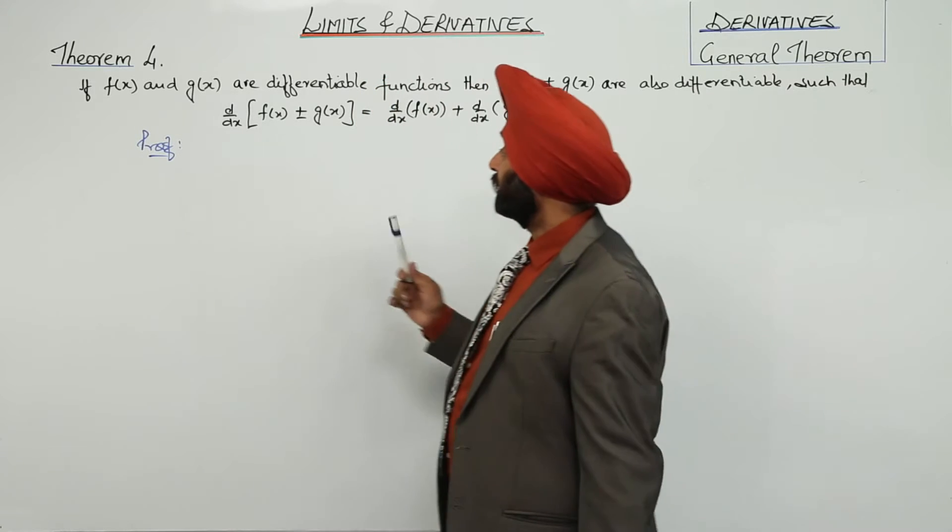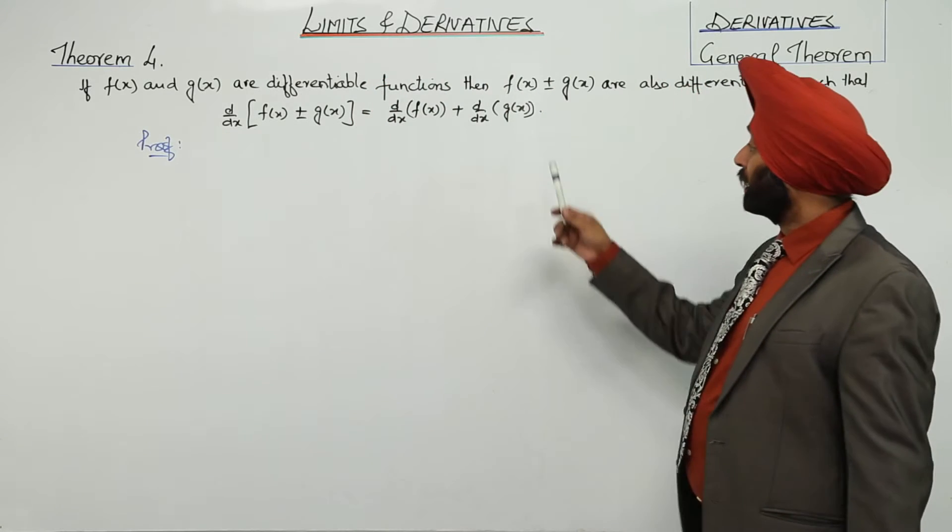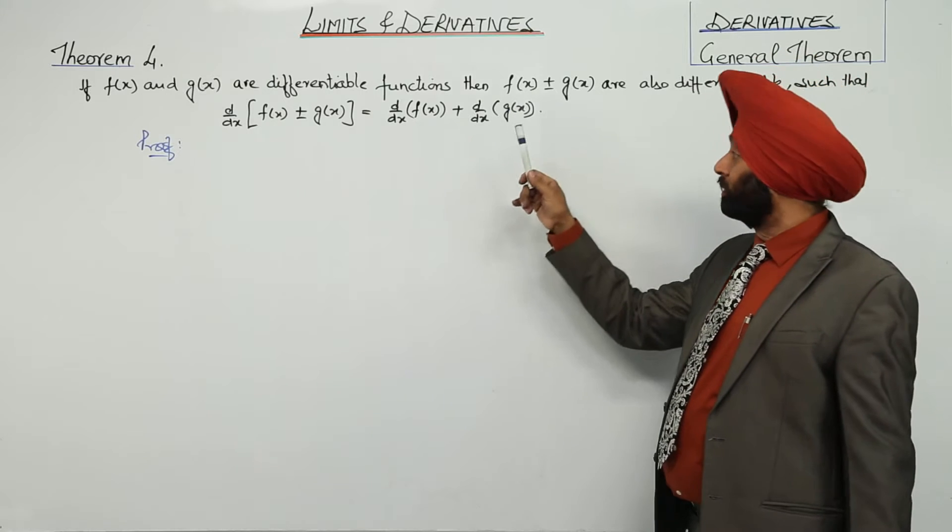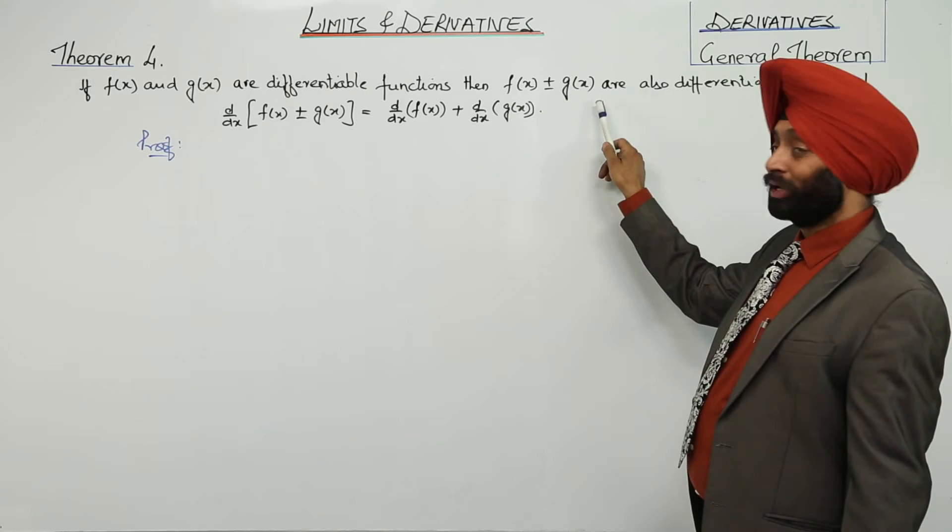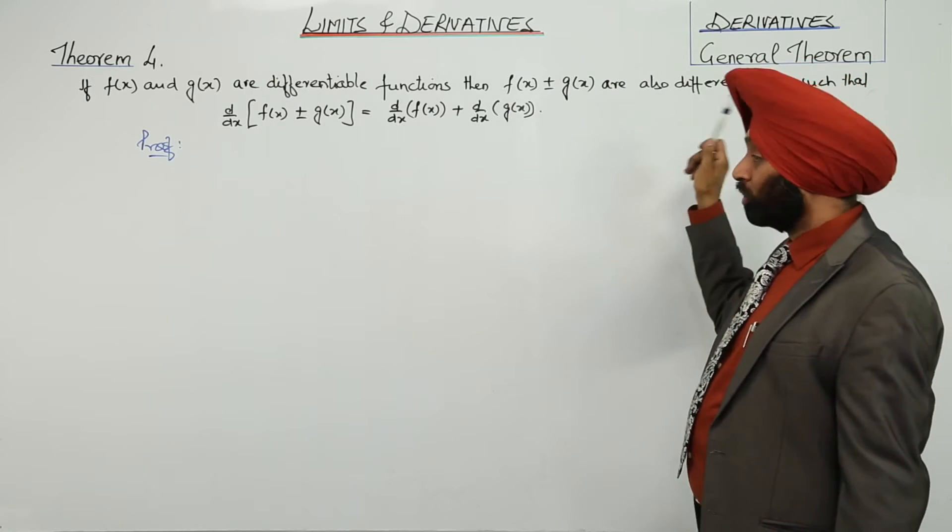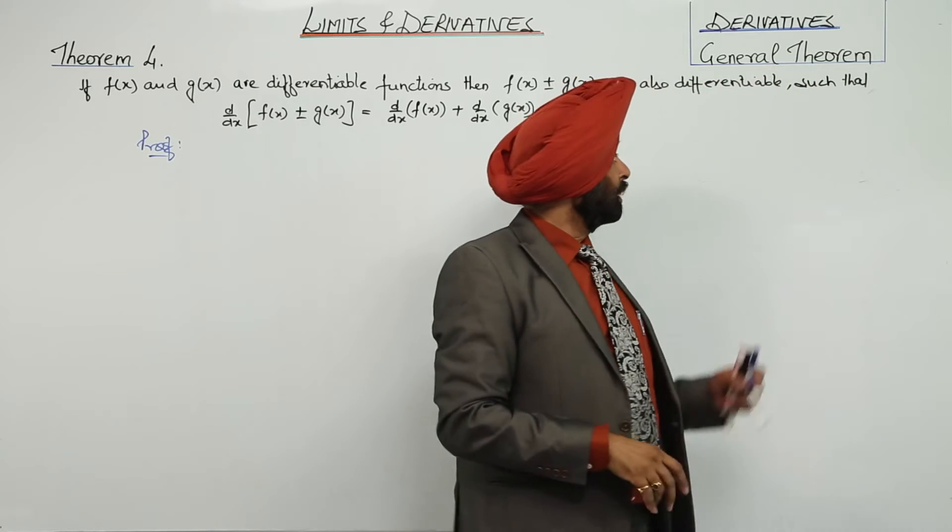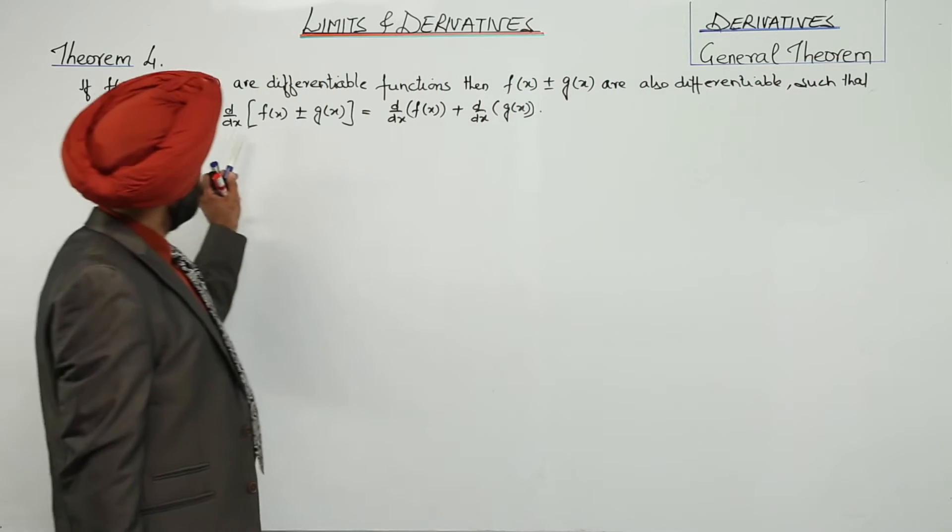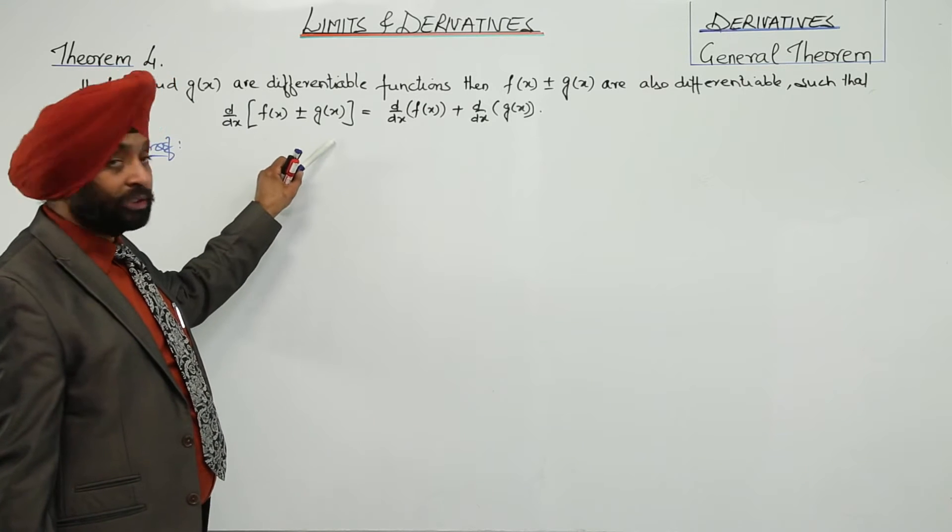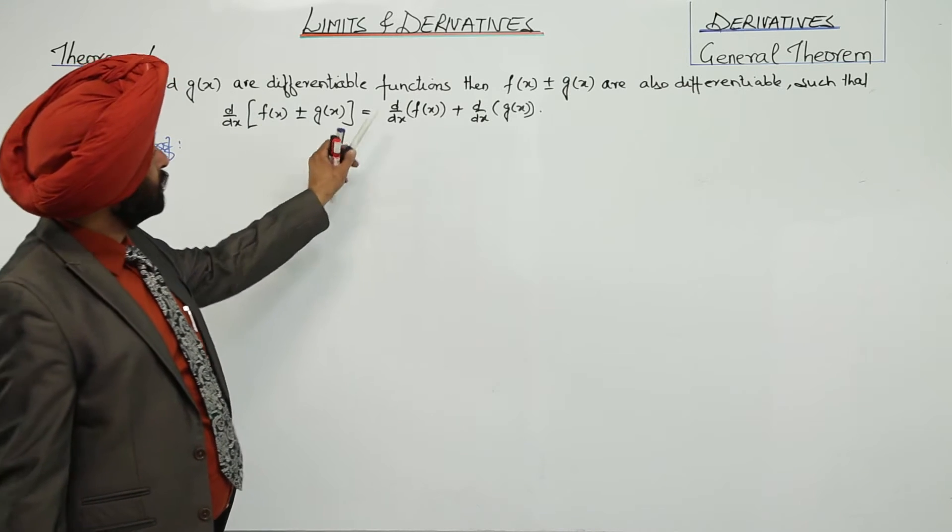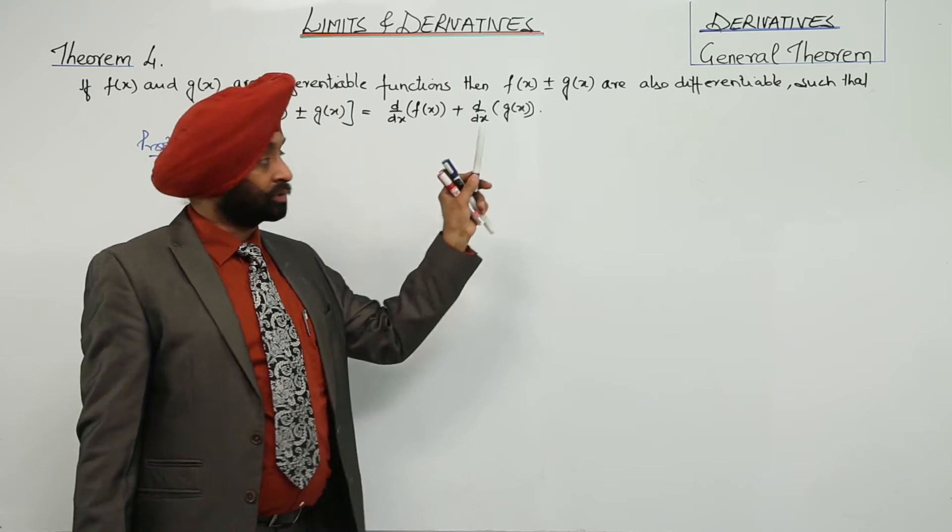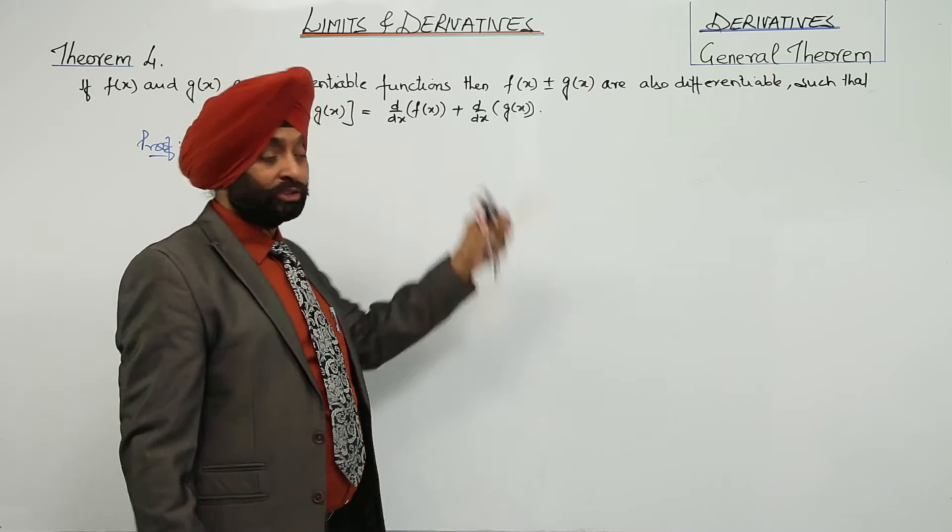Now Theorem 4: If f(x) and g(x) are differentiable functions, then f(x) ± g(x) are also differentiable such that the derivative of f(x) ± g(x) equals the derivative of f(x) plus or minus the derivative of g(x).